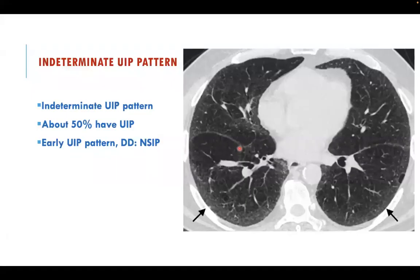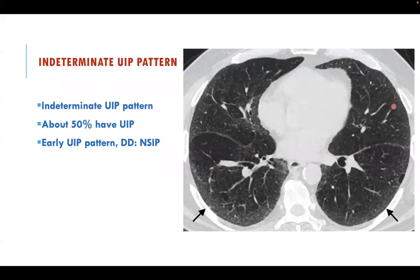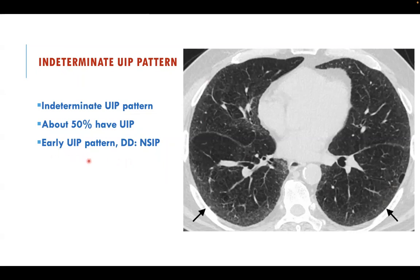Indeterminate UIP is the third category. Fifty percent of this vague pattern proves to be IPF on biopsy. When you see mild peripheral and basal ground glass opacity with reticulation, start using differential diagnoses. This should be reported as: presence of ground glass opacity in a peripheral location with mild reticulation — picture suggestive of cellular non-specific interstitial pneumonia, with early UIP pattern to be considered.